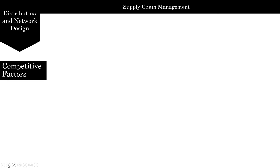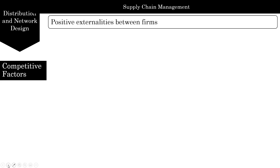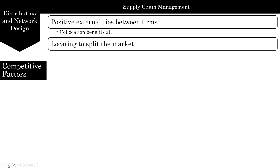Let's revisit competitive factors. With positive externalities, co-location benefits everybody — retail stores locating together in a mall is one example. Another example of positive externalities occurs when the presence of a competitor leads to the development of appropriate infrastructure in a developing area. For instance, if a large auto manufacturer comes in and builds infrastructure, it may help other competitors and make it easier for additional firms to locate nearby.